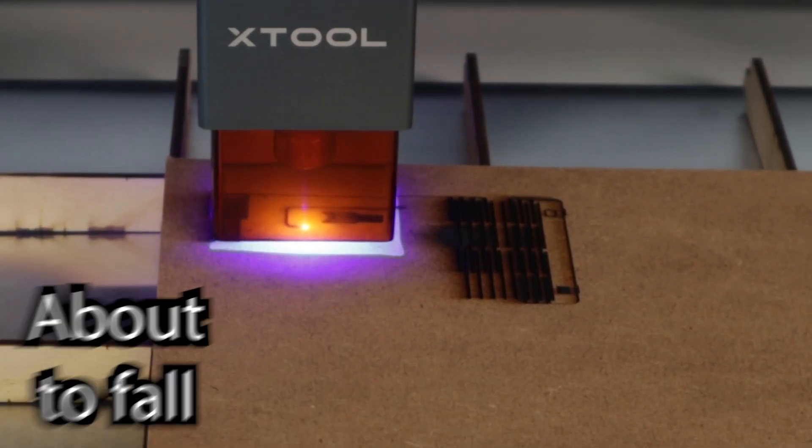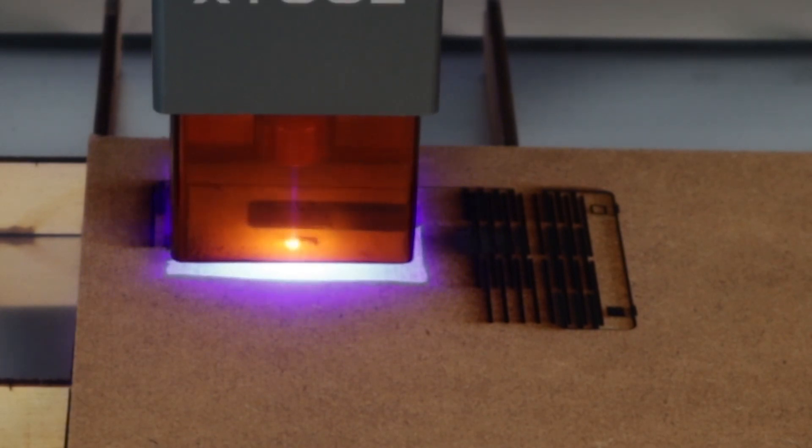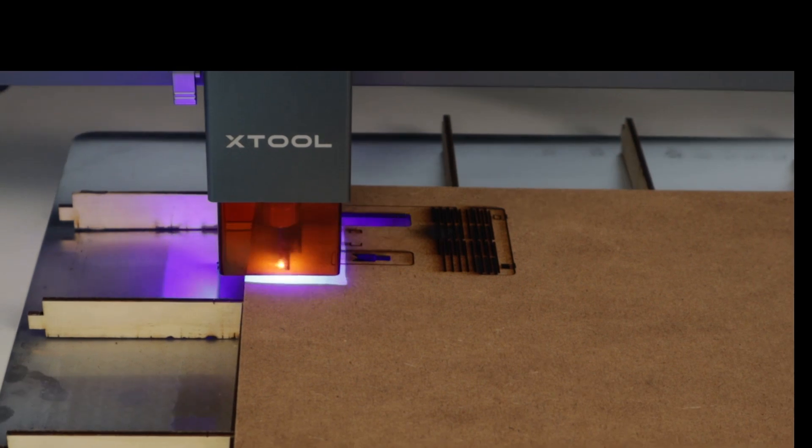Quite early we switched out the sacrifice board with an aluminum plate. This helped a lot with the amount of smoke since the sacrifice board was always getting engraved as well. And then we have an everlasting underlay.